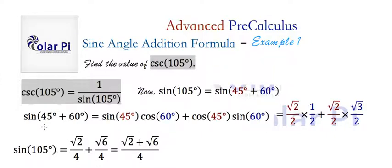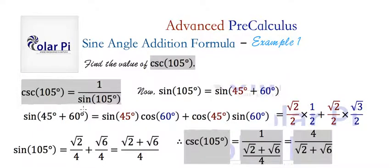since we have sine of 105, to get cosecant of 105 we just take the reciprocal of this, right? All right, and so when we do, we write this, one over sine of 105, which is going to be this here.